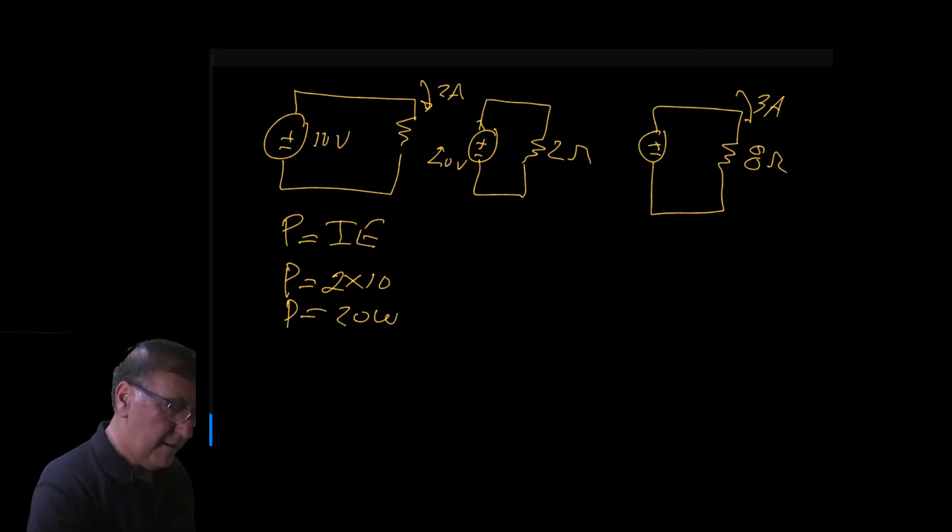In the second example here, we have a 2 ohm resistor and a 20 volt source. Power equals E squared over R, which equals 20 squared divided by 2 ohms. And that equals 200 watts.